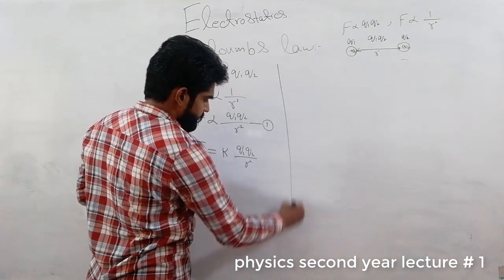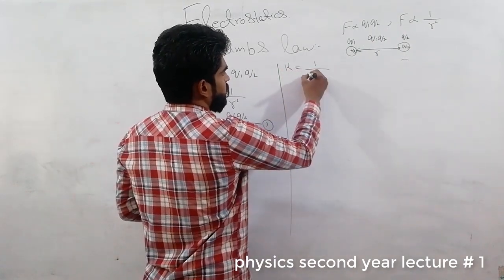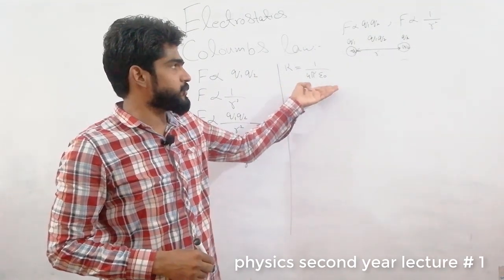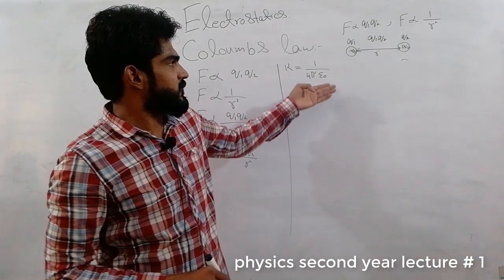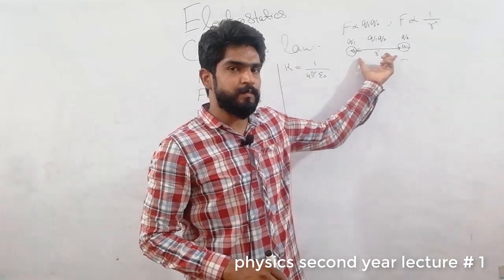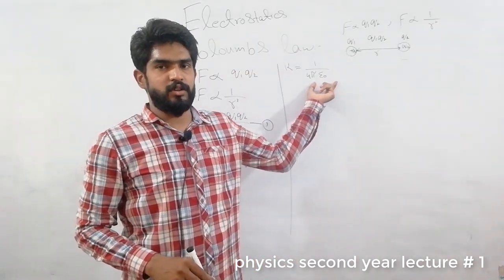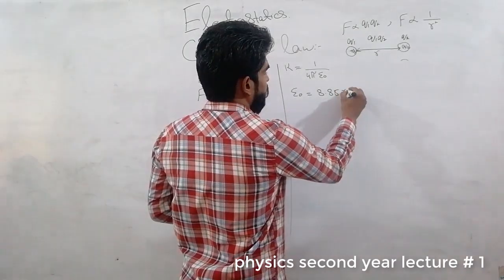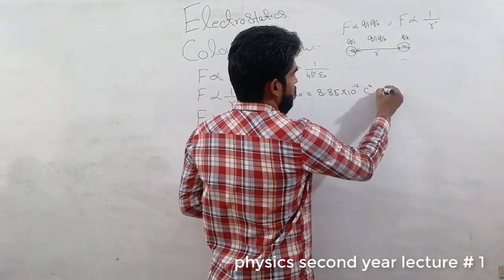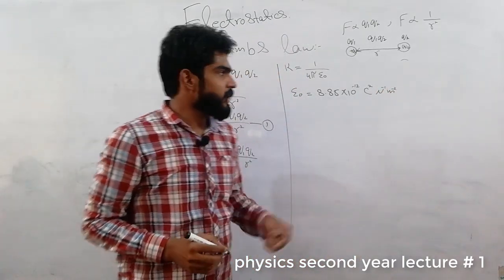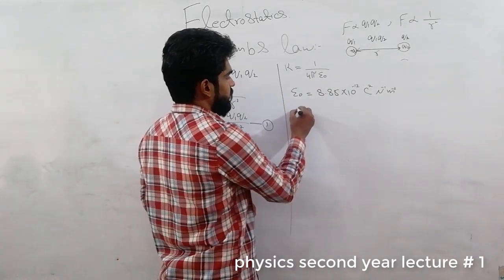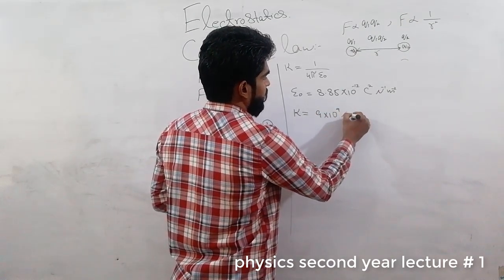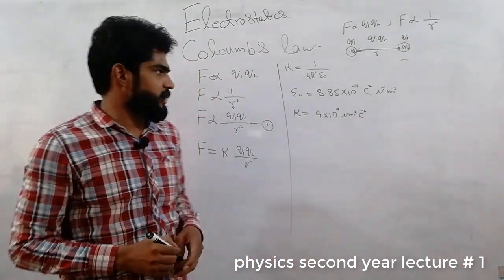The value of k is basically a constant equal to 1 over 4 pi epsilon-not. Here 4, pi, and epsilon-not are all constants. Epsilon-not is the permittivity of free space between the two charges. Its value is epsilon-not = 8.85 × 10⁻¹² coulomb square per newton per meter square.